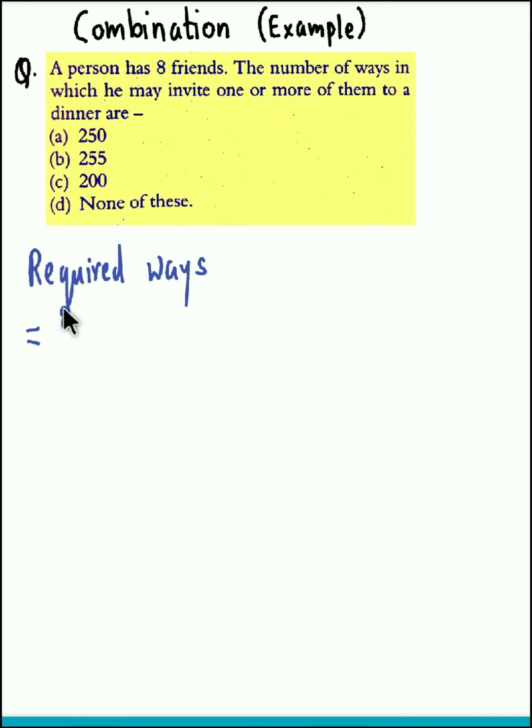So he could invite any one of his friends in 8C1 ways, or he could send the invitation to two of his friends in 8C2 ways, or he could invite three of his friends in 8C3 ways. Likewise this goes on up to he could invite all eight of his friends in 8C8 ways.